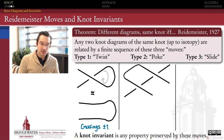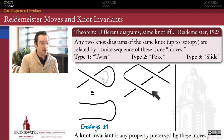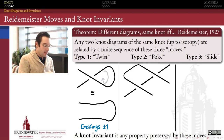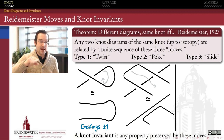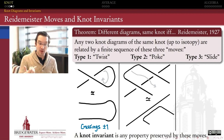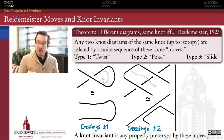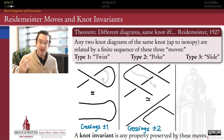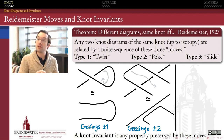The type 2 move is called the poke — it's type 2 because it involves two adjacent crossings. When two adjacent crossings both have the same over-versus-under orientation (going over a strand and then immediately over it again by doubling back), we can slide that loop back so it no longer lies over that strand. This simplifies the diagram by reducing the number of crossings by two. The type 2 Reidemeister move can add or remove crossings in pairs.